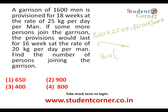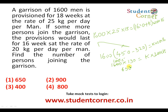1600 × 25 × 18 = 1600 × 20 × 16 + k × 20 × 16. Taking 1600 common: 25 × 18 = 450. Then 450 minus 320 is 130, so 1600 × 130 = k × 20 × 16 = k × 320. Therefore k = 1600 × 130 / 320 = 1.30 × 5 = 650. So 650 persons joined the garrison, which is why provisions lasted only 16 weeks at 20 kg per day per man.